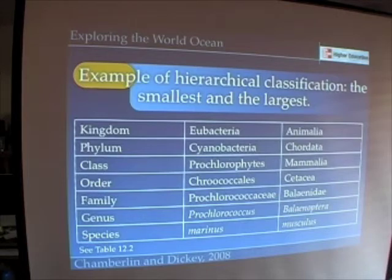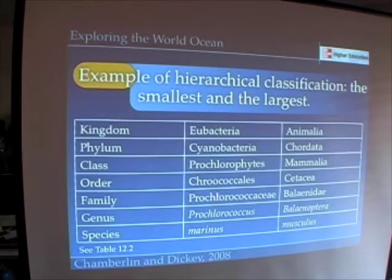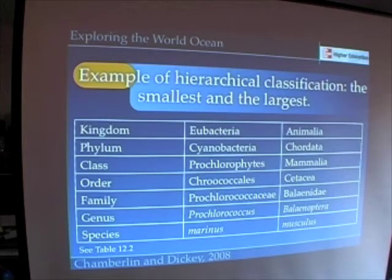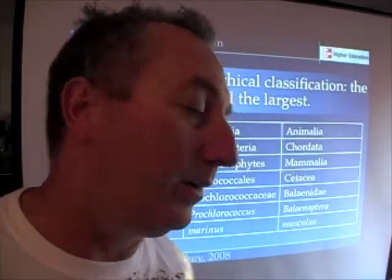If we look at really from the smallest of organisms to the largest of organisms, we can see the usefulness of this Linnaeus system. Here is one of the smallest photosynthetic organisms on Earth, Prochlorococcus. And here's the largest organism on Earth, Balaenoptera musculus, or you might know it as the blue whale.